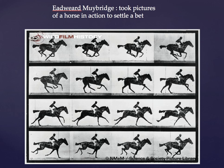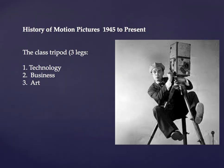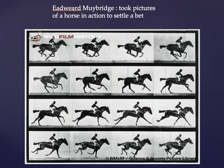Eadweard Muybridge — yes, that spelling is correct — took pictures of a horse in action to settle a bet. The question was: does a horse at full gallop have all four hooves off the ground at the same time? He placed cameras along a track with trip wires, maybe 10 or 20 cameras, and as the horse galloped it tripped them. The resulting images confirmed that yes, a horse does have all four hooves off the ground simultaneously. Leland Stanford — the name behind Stanford University — was one of the bettors.